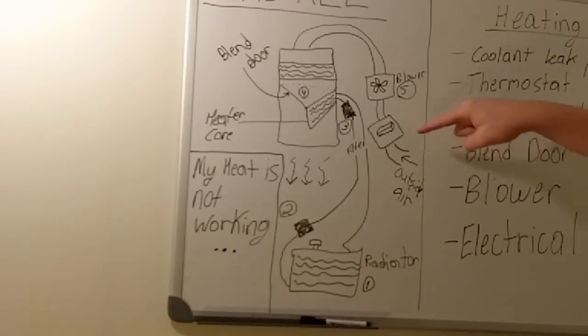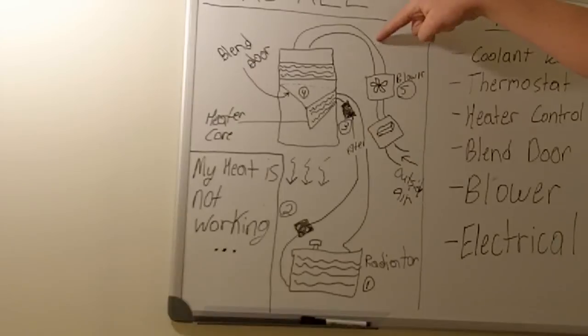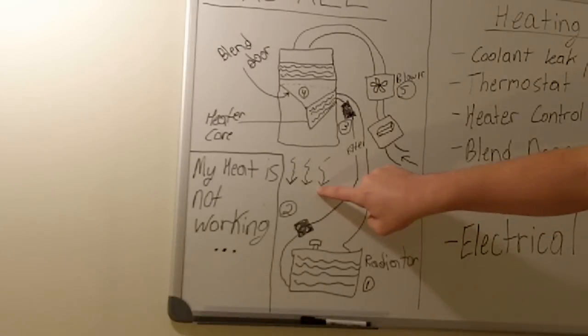Now, if the cabin filter is clogged or blocked in any way, shape, or form, then it's not going to allow air to be pulled. Or maybe if it's on the other side, it's not going to allow air to pass. So there's going to be low airflow on this side of the equation.